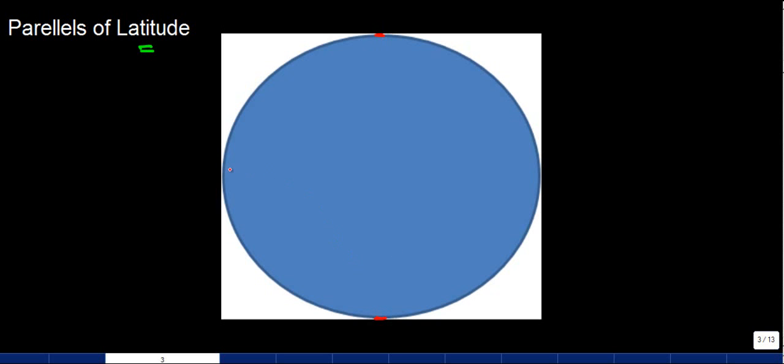Now we discussed that there is an imaginary line which divides this circle into two equal halves and we call it the equator.